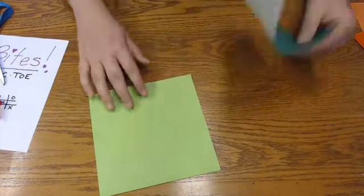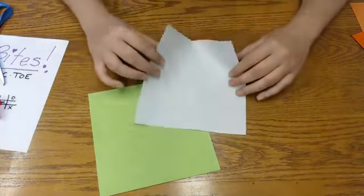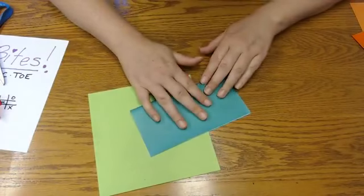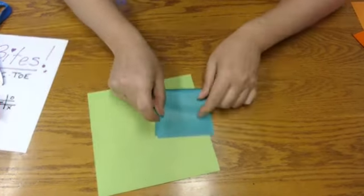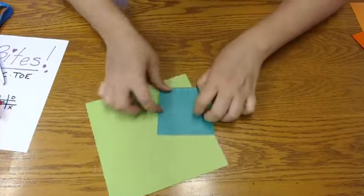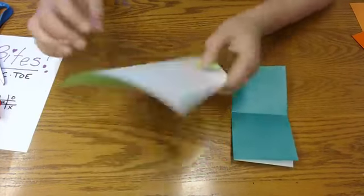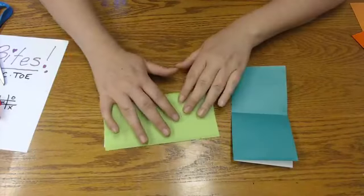The first step is to make our paper smaller. We're going to fold it into quarters. There we go. We'll fold both of our papers into quarters.